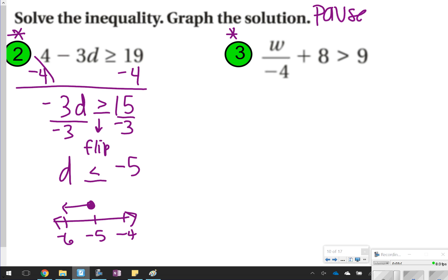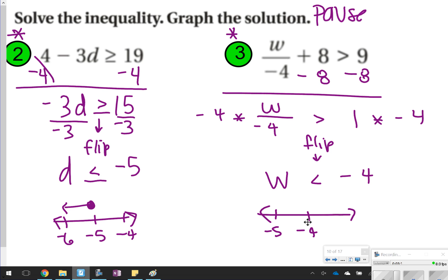For number 3, again, I'm going to subtract 8 first. So I have w over negative 4 is greater than 1. Since I'm going to have to multiply by a negative 4 on both sides, I'm going to flip my inequality symbol to be less than. So w will be less than negative 4. This graph will have an open circle pointing to the left. How did you do?